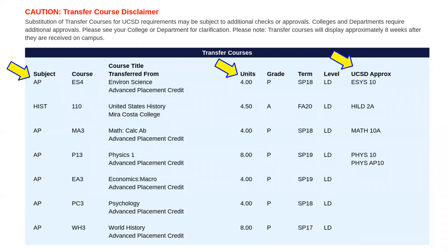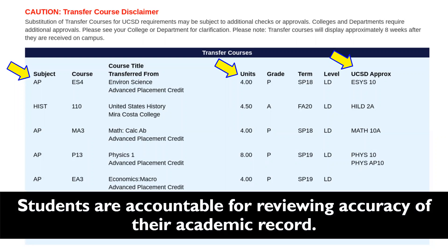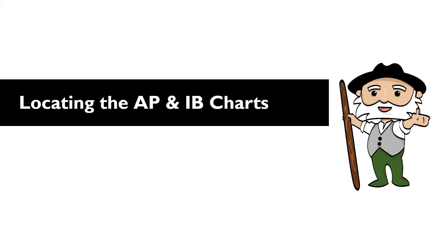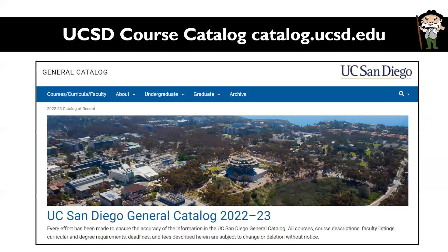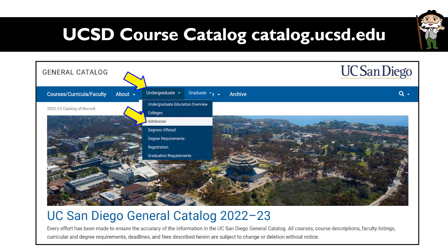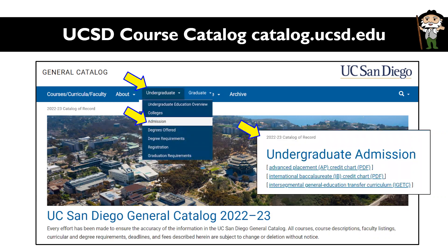It's always a good idea to review and monitor your academic history for accuracy. If you don't see your scores posted, contact UCSD Admissions. A resource to specifically locate AP and IB credit information is through the AP and IB charts. These are published annually by the university and document how AP and IB credits are posted to your academic history. To find these charts, go to the UCSD course catalog at catalog.ucsd.edu. Click on the Undergraduate tab on the top menu bar and then select Admissions. A webpage will pop up that hyperlinks the AP chart and the IB chart.